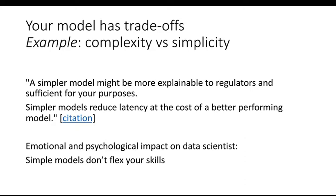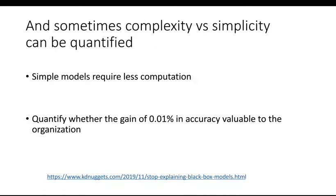I often see data scientists get caught up in the issue that the simple model, although helpful, doesn't take advantage of all the programming and math skills they've invested in. But the goal of the data scientist is not to use all their skills — it's to inform the organization's decision-making process. There are reasons to use more complex models since they may explain more edge cases, but sometimes a simple model does have benefit: it requires less computation, costs less, and may get you most of the right answers. Adding complexity for only incremental improvement is usually not useful.